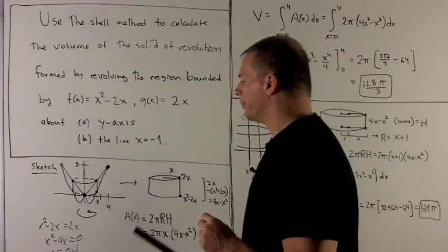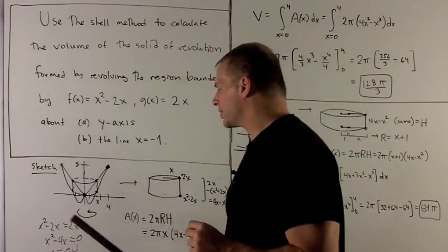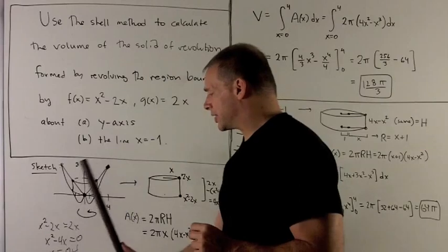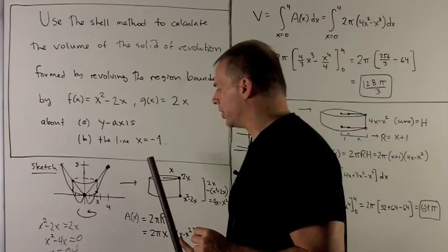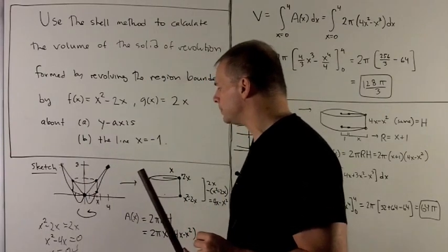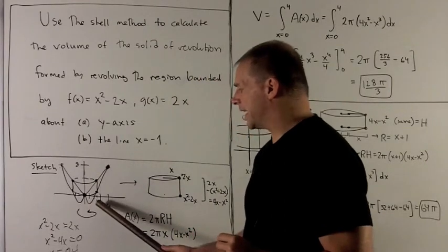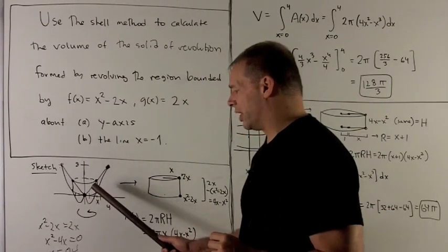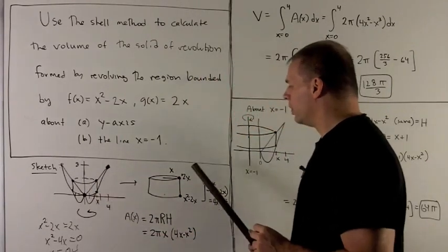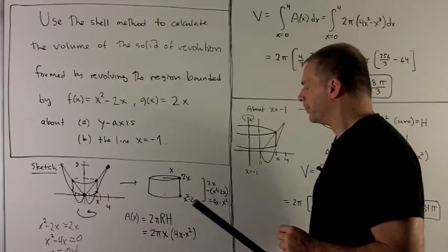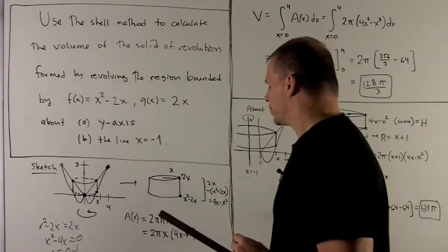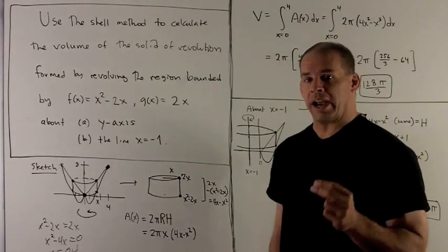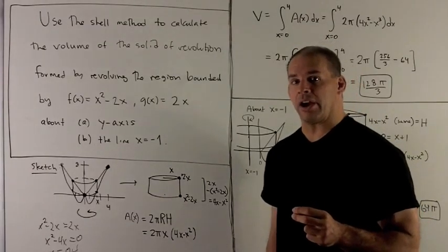So we're going to take this region here. I'm going to revolve it around the y-axis. We know that's going to sweep out a whole bunch of cylinders going from 0 to 4. So if I fix an x, I want to take one of these cylinders and get an idea of what its area is going to be.